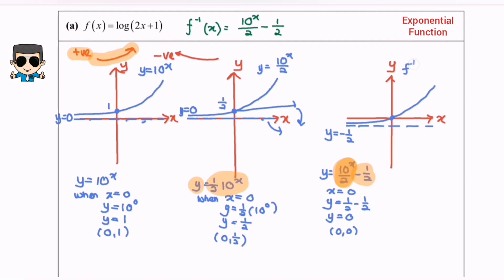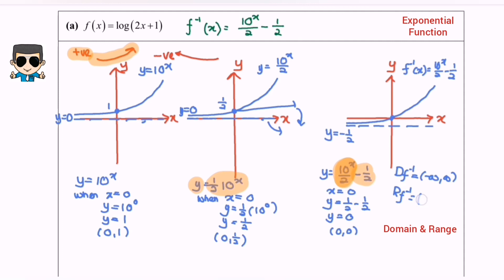Finally, f inverse equals 10 to the power of x over 2 minus 1/2. The domain for f inverse is negative infinity to positive infinity, referring to all x values. The range for f inverse covers all y values: the minimum value is negative 1/2 and the maximum is positive infinity. That is how we sketch the graph for the exponential function. Thanks for watching.